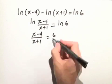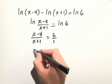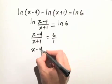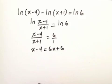Now in order to solve this, we can multiply both sides by x+1, which is the same as cross multiplying. We have x-4 equals 6x+6.